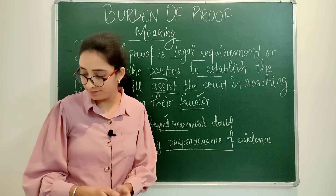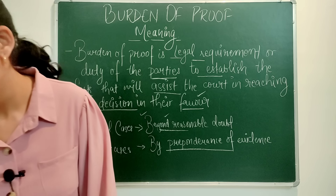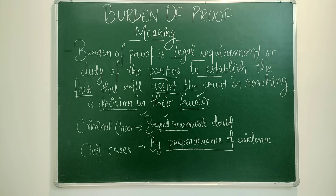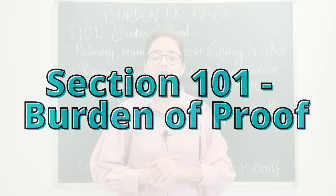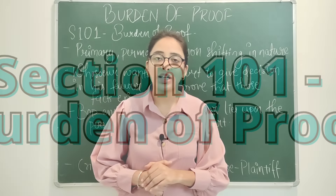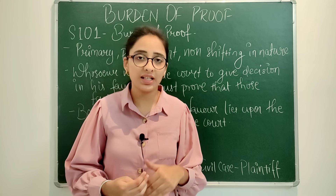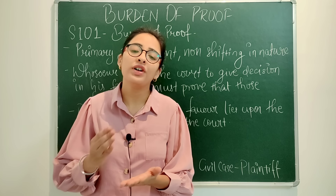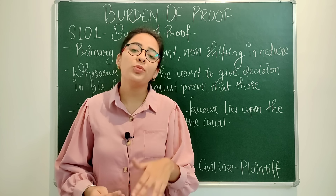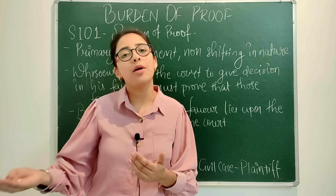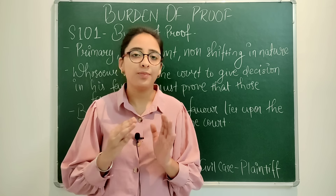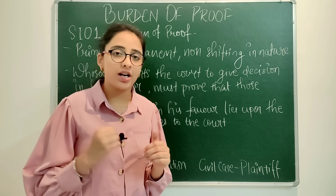Now let's look at section 101. Section 101 says that whenever a person approaches a court and wants the court to give judgment in his favor, the burden of proof lies upon that person to prove his legal right and the liability of the other party. This is written in section 101.